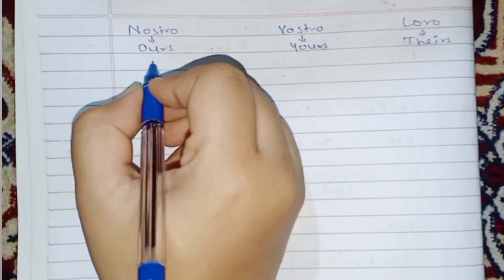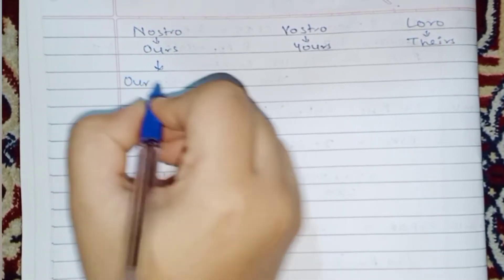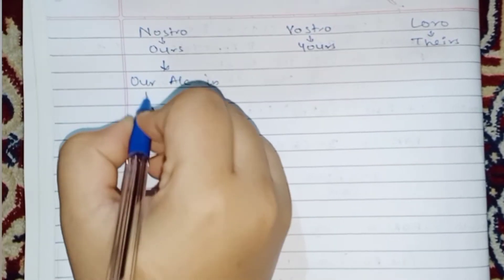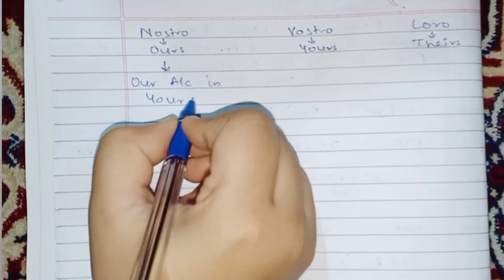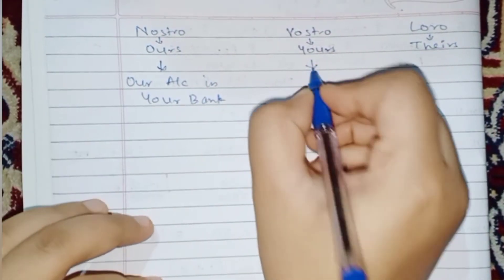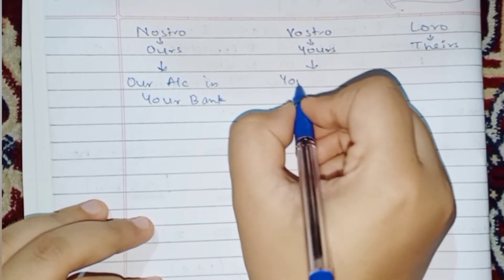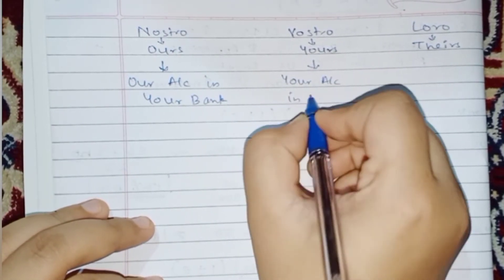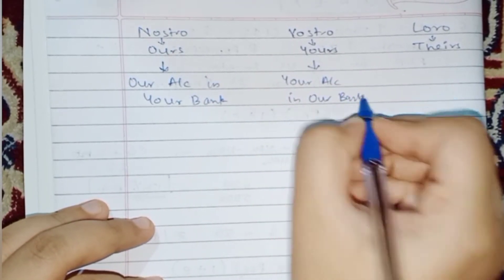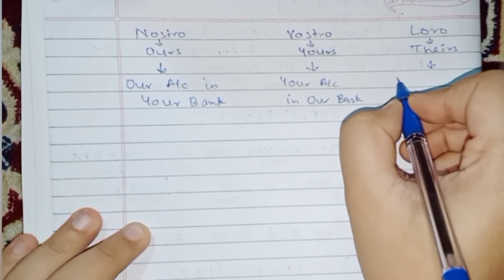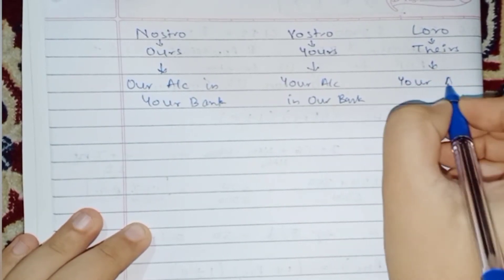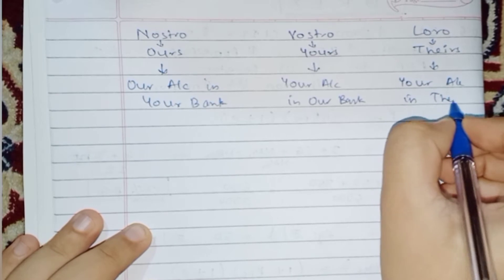So, Nostro means our account in your bank. Similarly, Vostro means your account in our bank, whereas Loro means your account in their bank.